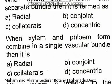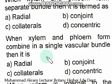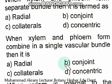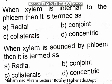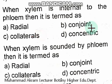When xylem and phloem are combined in a single vascular bundle, it is termed as conjoint. When xylem is internal to the phloem, it is termed as collateral — this is the right option.